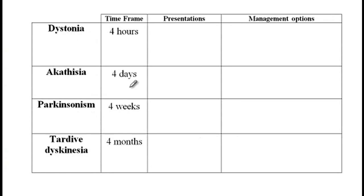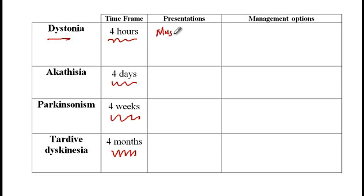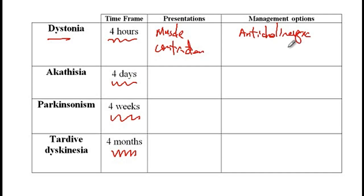Dystonia usually happens within four hours of medication administration and presents with sustained muscle contraction. For instance, contraction of the sternocleidomastoid muscle causes the neck to be directed toward one direction and the patient can't move the head to the other side. Treatment includes anticholinergic agents like diphenhydramine or trihexyphenidyl, or Botox injection into the affected muscle to release the contraction.